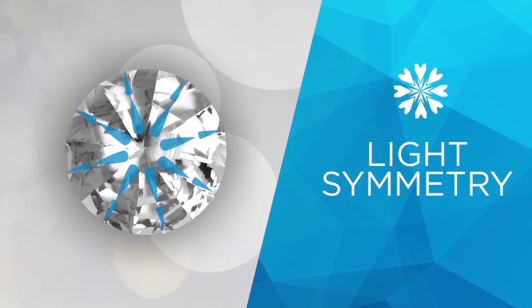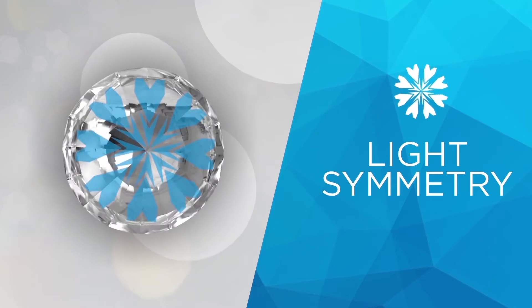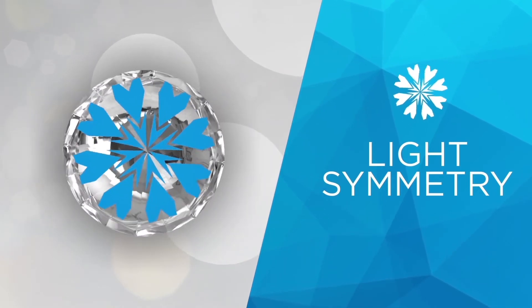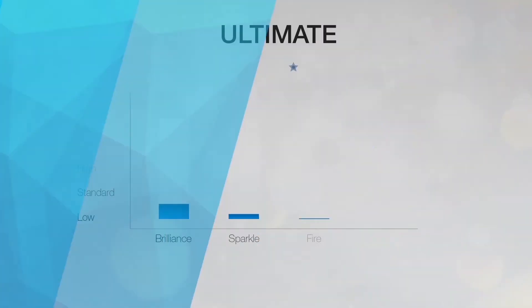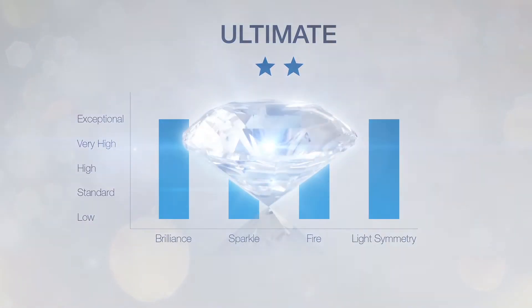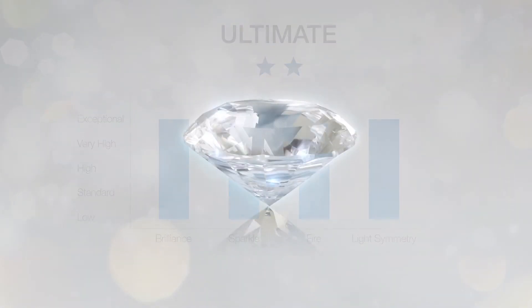Light symmetry is the measure of light distribution within the diamond based on the cut proportions and the position of natural inclusions. Taken together, these light performance measurements create the diamond's overall light performance grade, reflecting the diamond's true beauty and desirability.